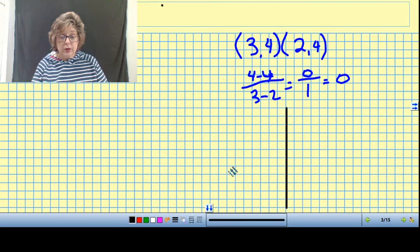Well, let's just plot these two points and look at it. So I have 3, up 4, and I have 2, 4. And if I drew that line going through that, I now have a horizontal line. So horizontal lines have slope of 0.